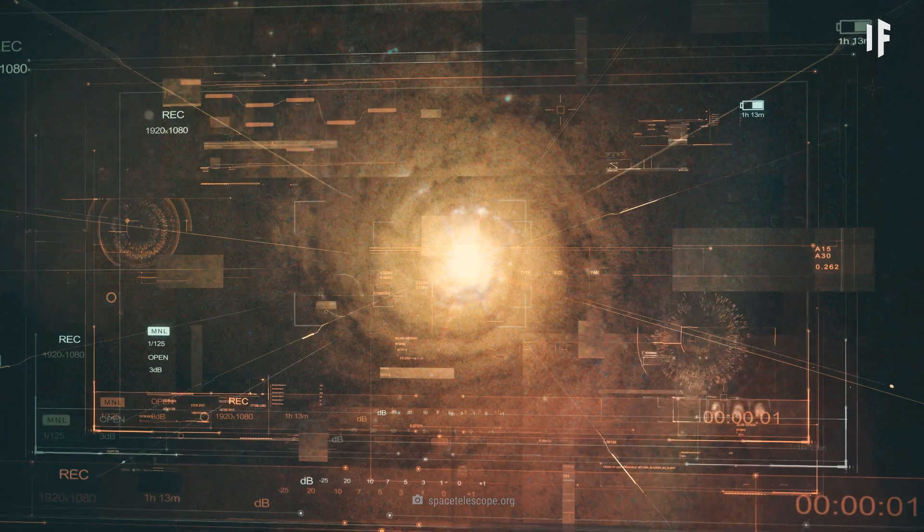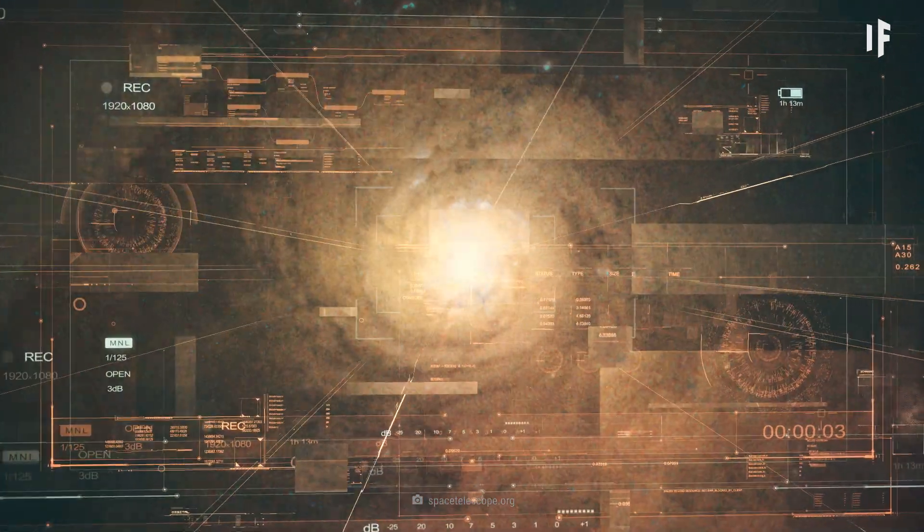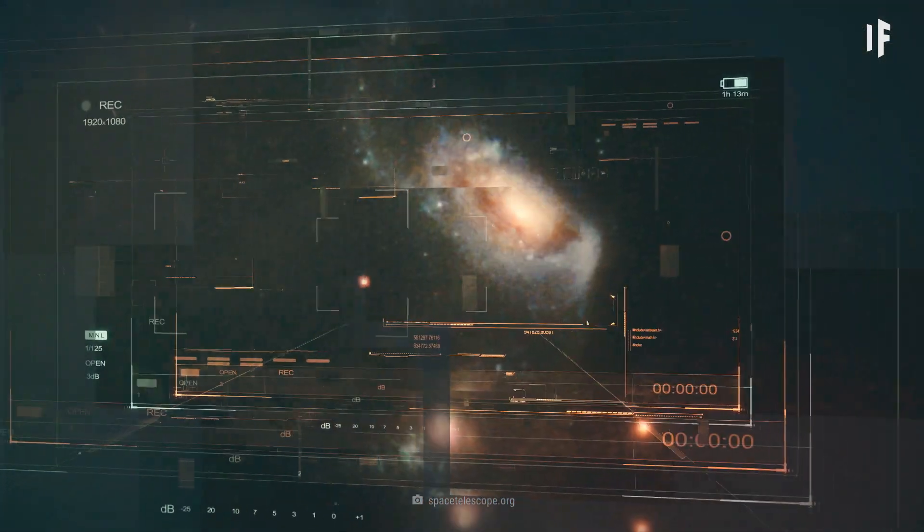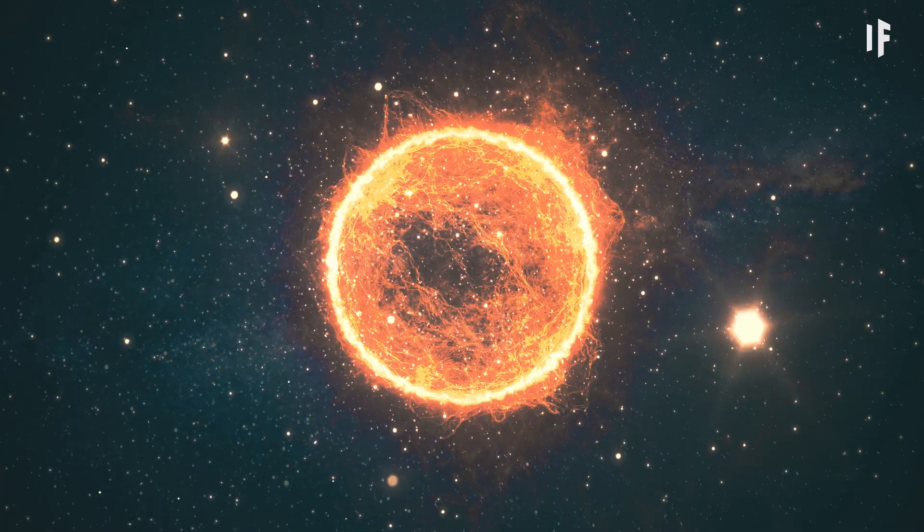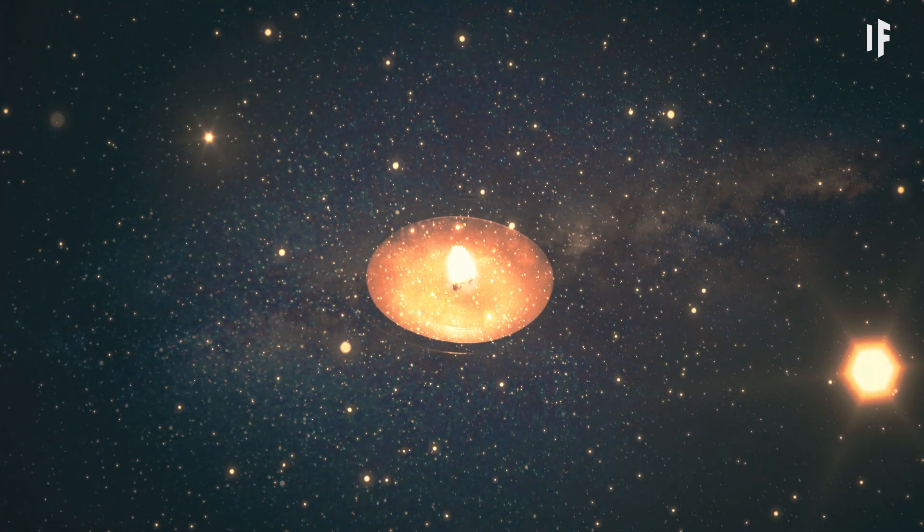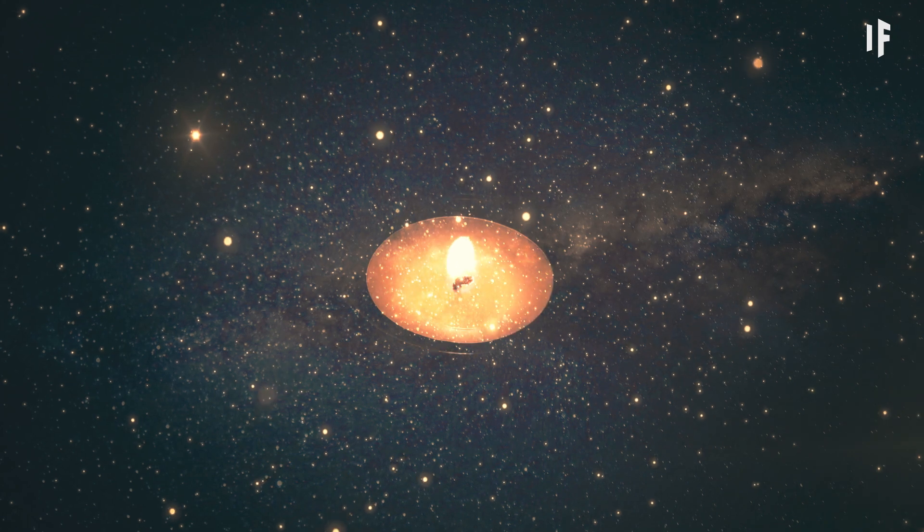Quasars throw off jets of particles that are so bright, they outshine all the stars in their galaxies. So our Sun would essentially turn into a candle in the middle of a very bright spotlight.